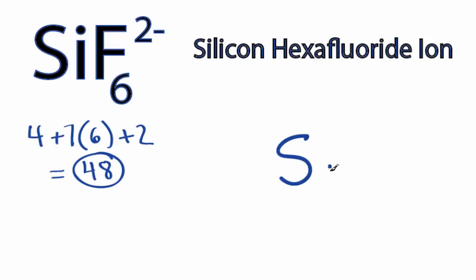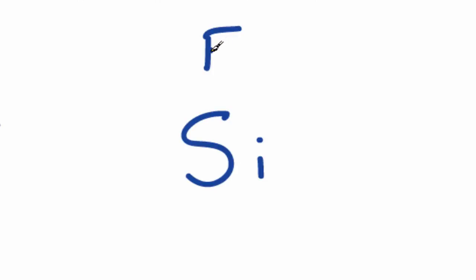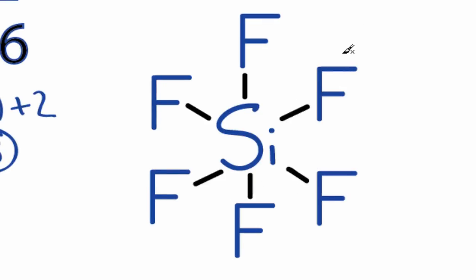Si is the least electronegative. We'll put that at the center, and then we'll put the fluorines around it. We'll form chemical bonds between the Si and each fluorine. Each of these is 2 valence electrons. We've used 12 valence electrons.